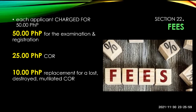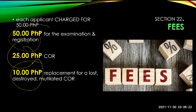Regarding fees: the board shall charge each applicant for examination and registration the sum of 50 pesos; for each certificate of registration issued without prior examination, the sum of 25 pesos; and for a lost, destroyed, or mutilated COR, just 10 pesos — though you should still take care of your COR.